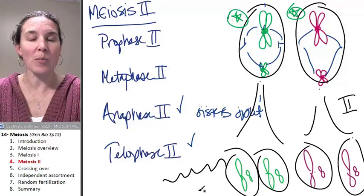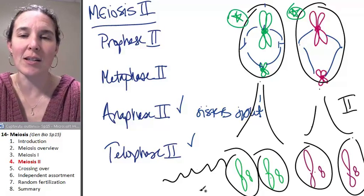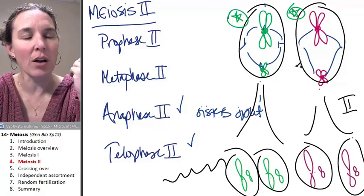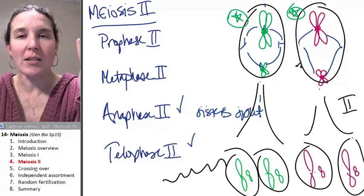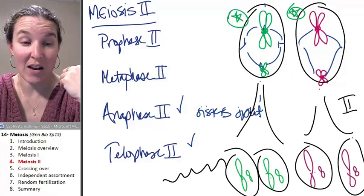For one, we have the process of crossing over. Let's look at that more closely. For two, we actually have a process called independent assortment that is significant for producing genetic diversity.